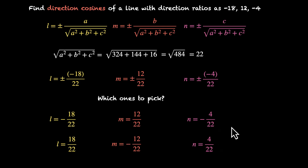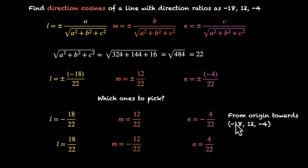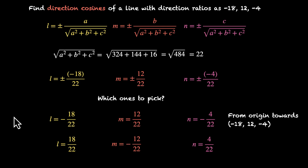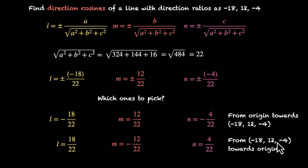We get the first set of direction cosines when moving from the origin towards a point with coordinates the same as the direction ratios — i.e., from origin towards (−18, 12, −4). If we move from that point towards the origin instead, we get the opposite set.